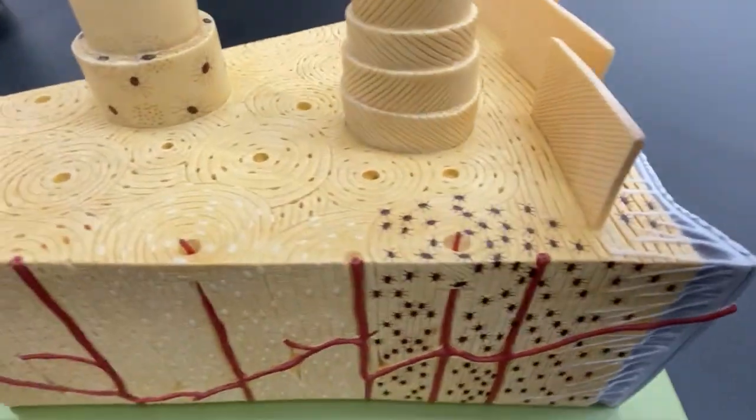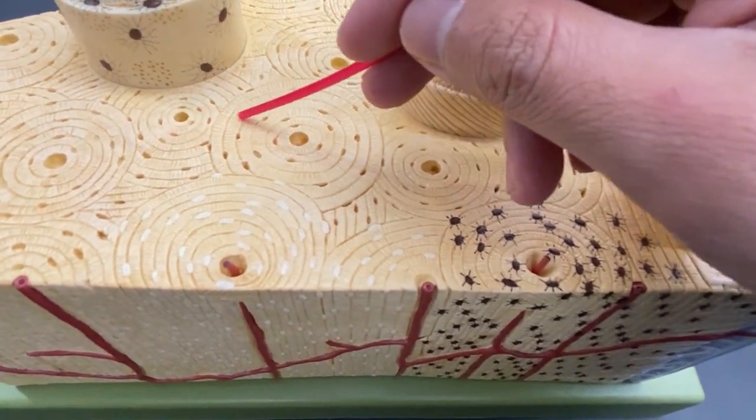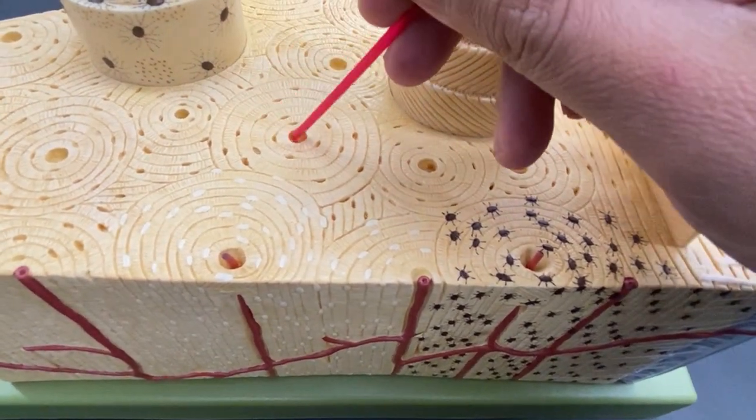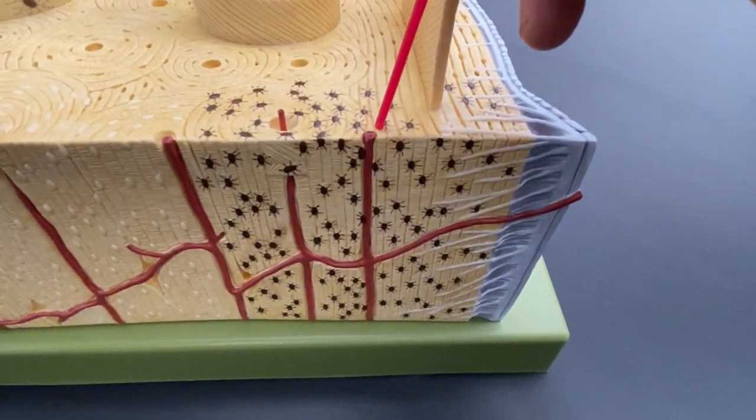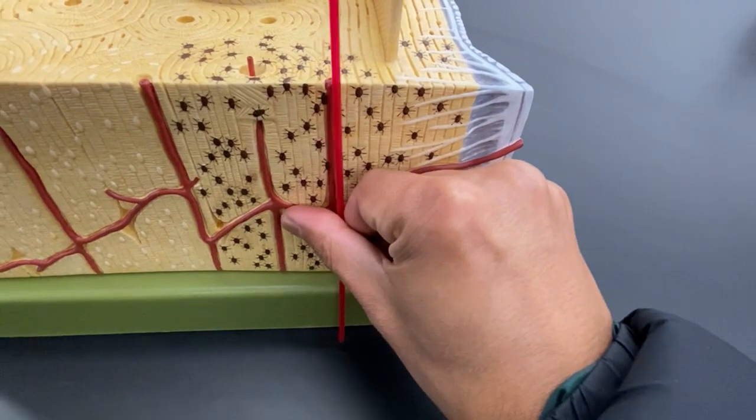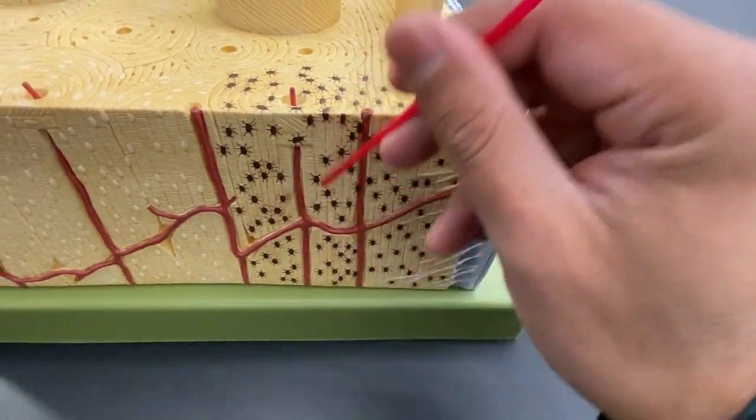This right here is your osteon model, and it has a central canal. Inside the central canal, you have mostly a blood vessel, kind of matches my straw pointer here, but you also have nerves.